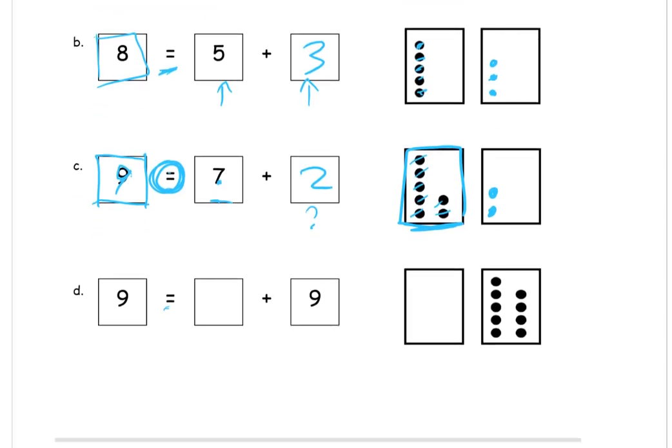And our last one on this page, we have, again, the total first in this case, right? Because there's the equal sign. Nine equals something plus nine. Well, we already have one, two, three, four, five, six, seven, eight, nine. This is the nine. This is the other side of that nine. And so, that's it. We already have nine. We can't add any more circles. Zero.